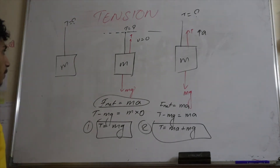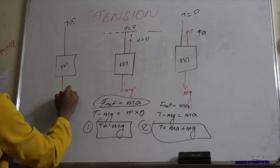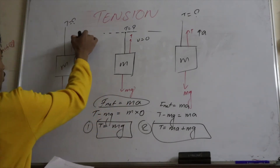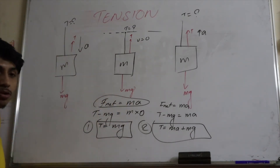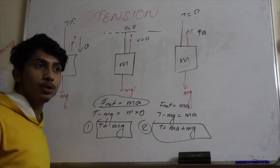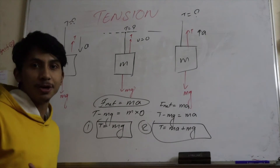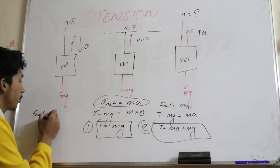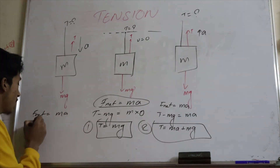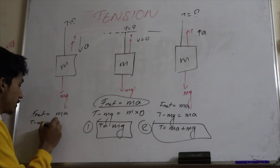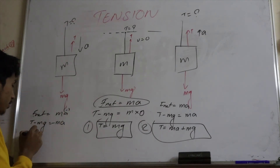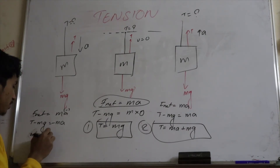In the third case, we have the same mass with tension acting upward and mg acting downward, but the acceleration is downward — not upward. When the acceleration is downward, you treat it as retardation. So F_net equals ma becomes T minus mg equals negative ma.